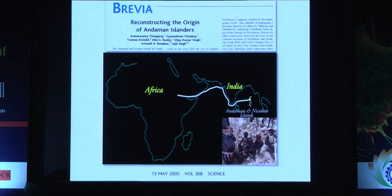Another interesting aspect of India is that the first out-of-Africa humans migrated and reached the Andaman and Nicobar Islands about 65,000 years back. Some groups typically look like Africans, but they diverged about 65,000 years back.